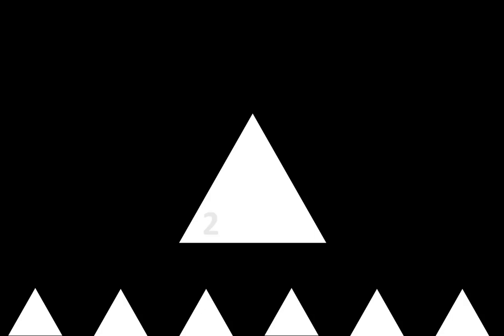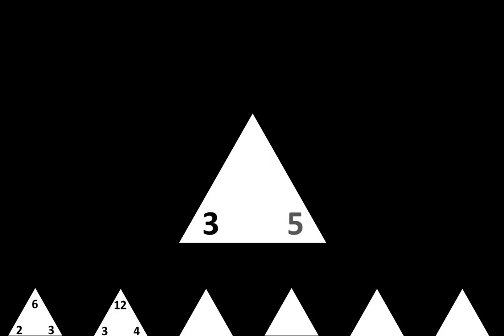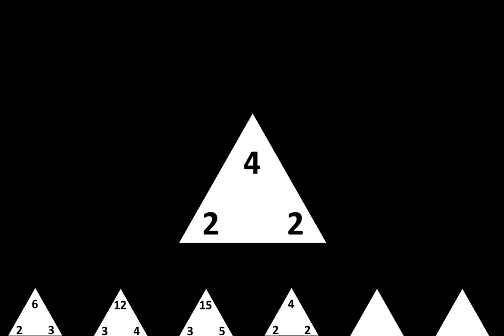Let's move to the next row. The next one is 2 times 3 is equal to 6. The next one is 3 times 4 is equal to 12. The next one is 3 times 5 is equal to 15. The next one is 2 times 2 is equal to 4. The next one is 3 times 3 is equal to 9. And the last one is 2 times 5 is equal to 10.